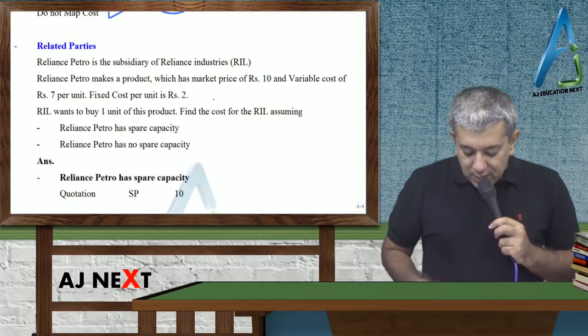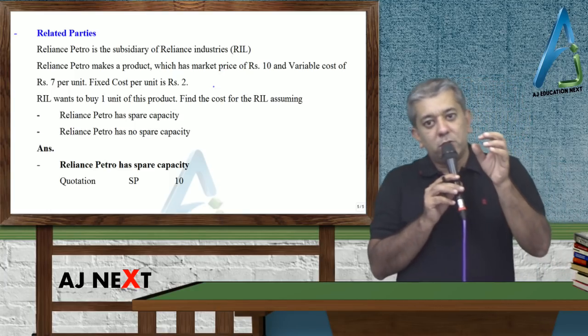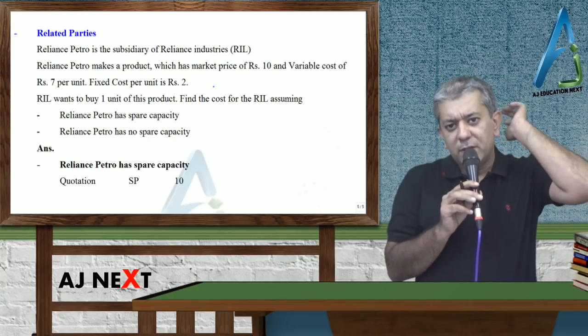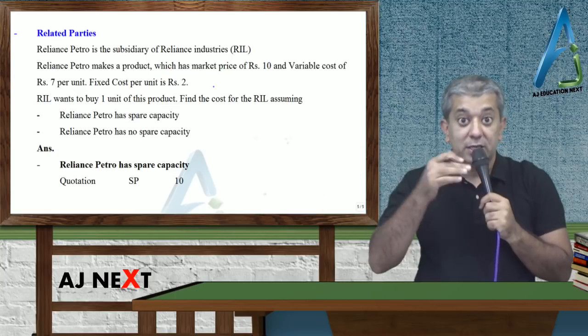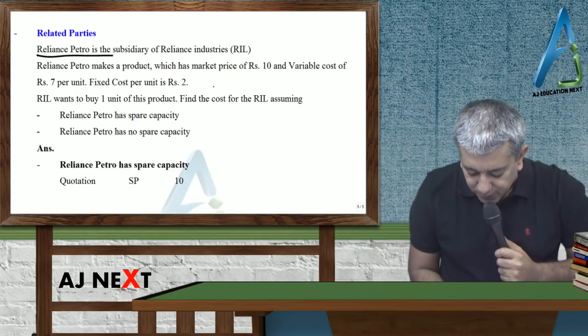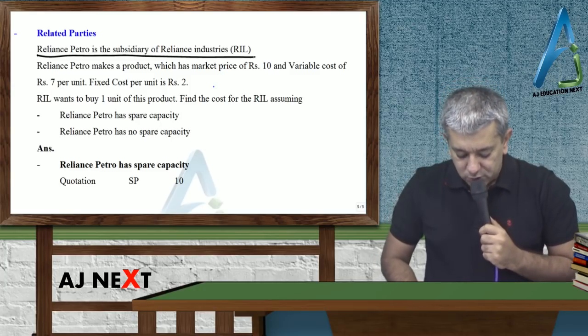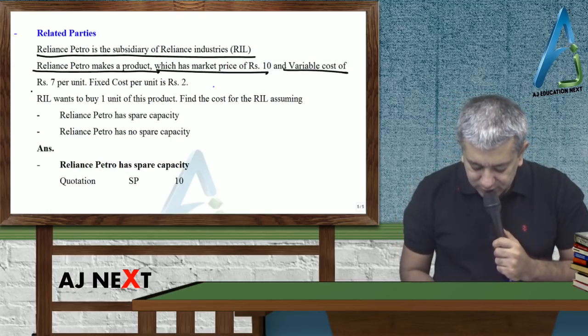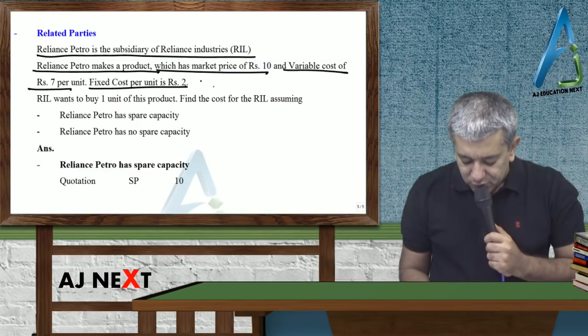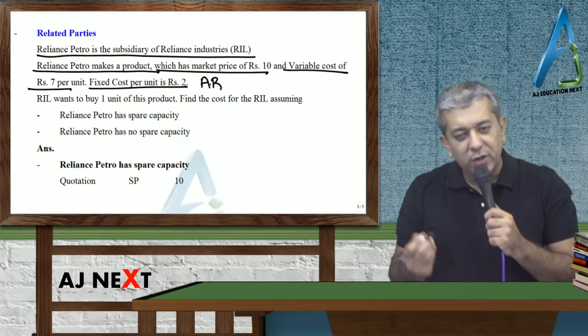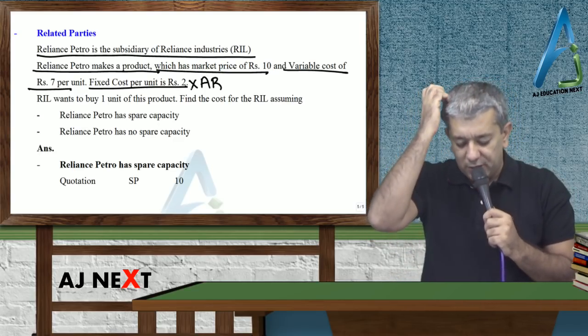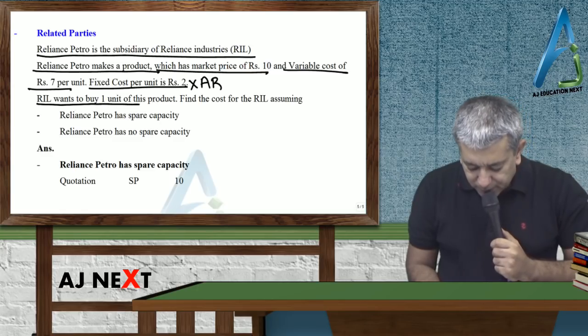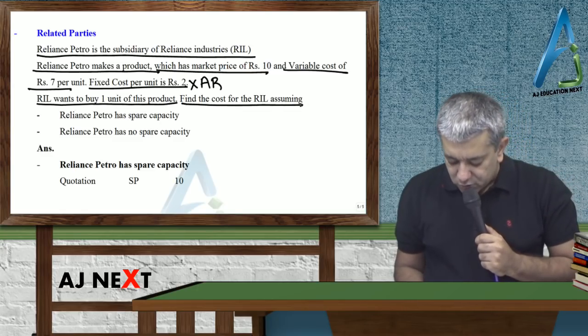Now, related parties. Suppose one subsidiary company is buying something from holding company, or vice versa also. Matlab, koi transaction ho raha hai, 2 related parties ke under. That is important. Reliance Petro is subsidiary of Reliance Industries. Reliance Petro makes a product which has market price of 10, variable cost is 7, fixed cost is Rs. 2. Beta fixed cost kabhi bhi per unit diya raha hai, toh, woh absorption rate hai. Woh toh absorption rate hai.